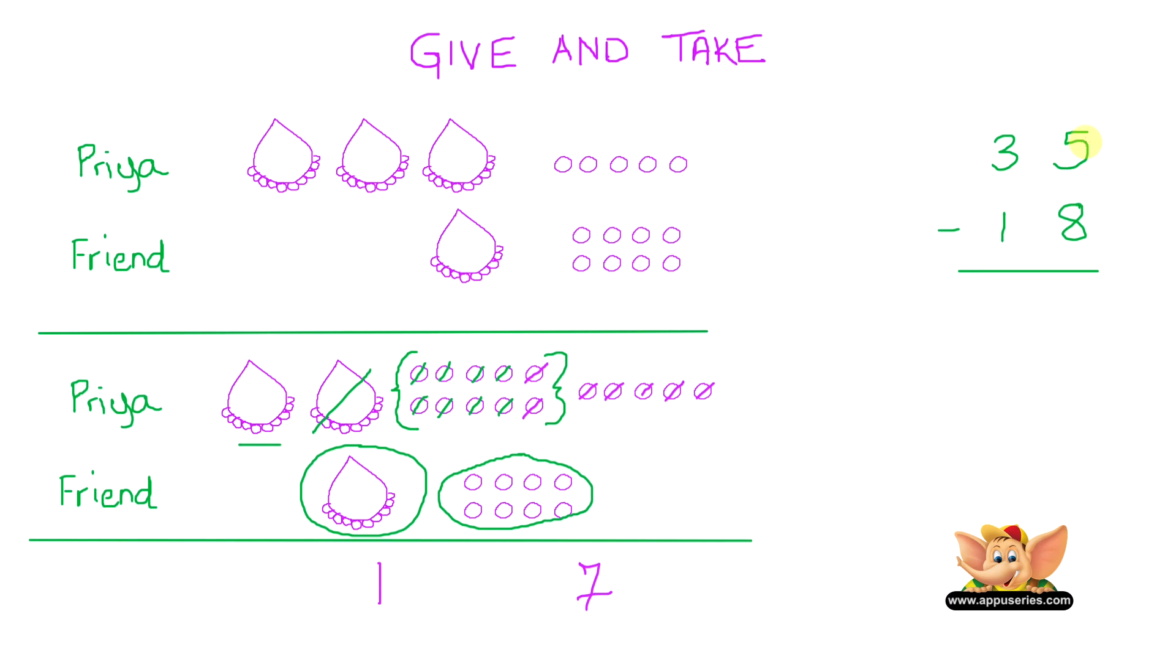Now let's go to the problem over here. We've written it in numbers. We cannot subtract 8 loose pearls from 5. So when we borrowed 1 ten, we were only left with 2 necklaces. And we added a 10 over here. So in total, we had 15 loose pearls. And now we can subtract 8 from 15 loose pearls.